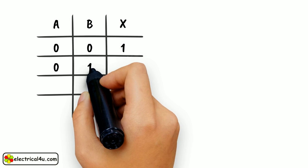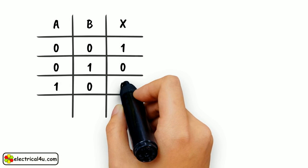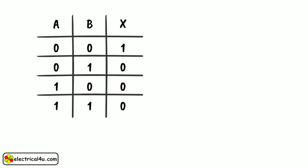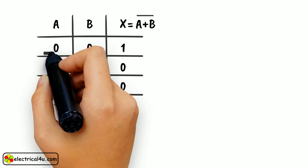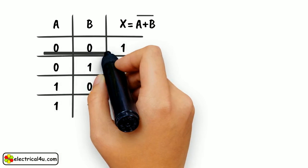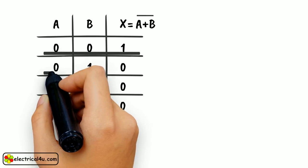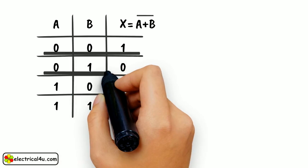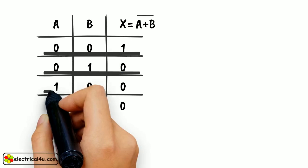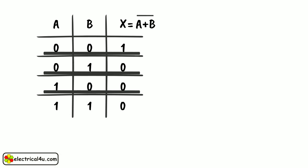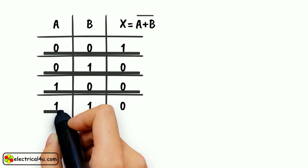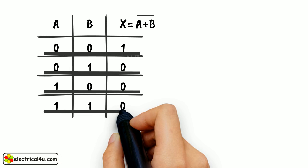The truth table of a NOR gate is shown here. Here output is whole bar of A plus B. Here when A and B both are 0, the output is 1. When A is 0 and B is 1, the output is 0. When A is 1 and B is 0, the output is 0. And when both A and B are 1, the output is 0.